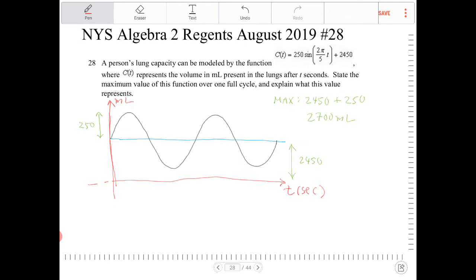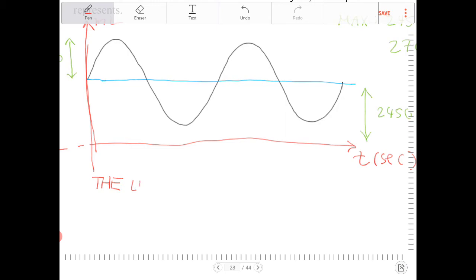So, the lungs will have a maximum capacity of 2700 milliliters per cycle.